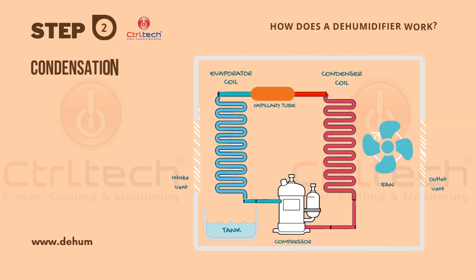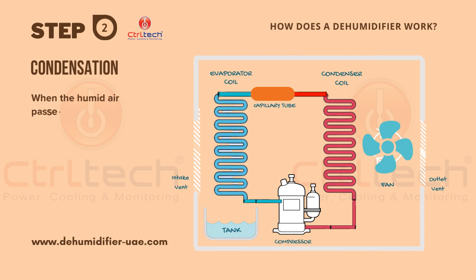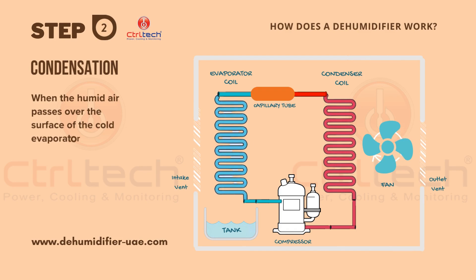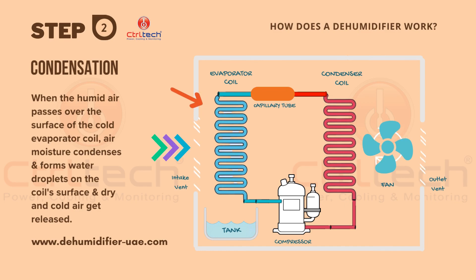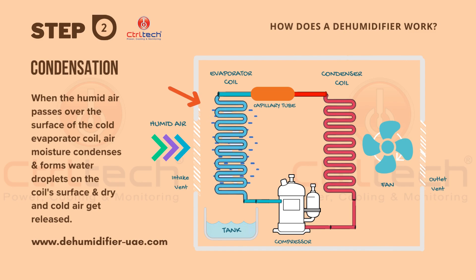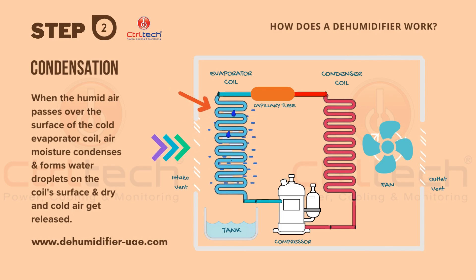In stage two, actual condensation happens and humidity from the air is removed. Due to the refrigeration cycle, the evaporator coil becomes very cold and its temperature becomes less than the dew point of the humid air — so it has a very cold surface. When humid air from the room is passed over the cold surface of the evaporator coil, the moisture present in the humid air condenses in the form of water droplets and accumulates on the evaporator coil. This process is called condensation, and in this stage the actual moisture from the air is removed.